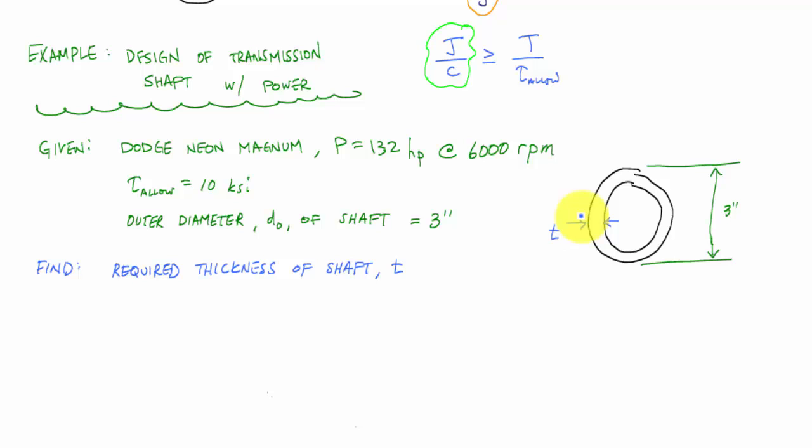So here, I'm given power and a frequency. And so the first thing I want to do is determine the internal torque or the torque requirement, the determined internal torsion. And this is usually just a unit conversion. So if you recall, that formula power was equal to T times omega.